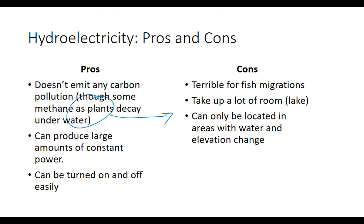Much like nuclear, coal, and natural gas, hydropower can produce electricity whether it's sunny or cloudy, nighttime or daytime — it always works. One additional benefit the others don't have is that it can easily be turned on and off. You need electricity, open the gates; you don't need electricity, close the gates. That flexibility is really cool.